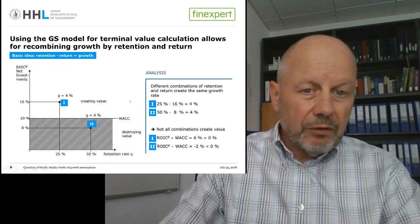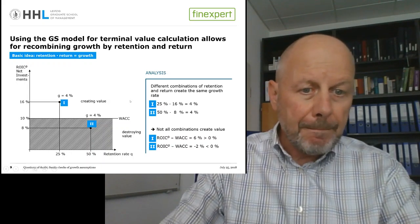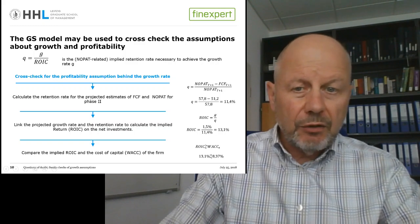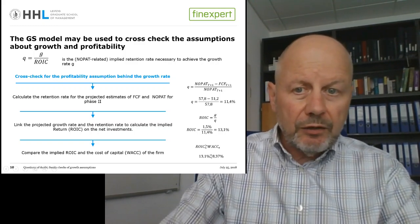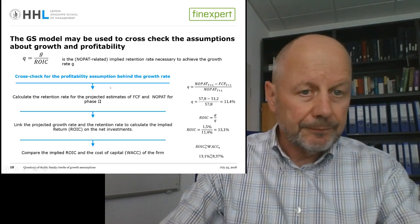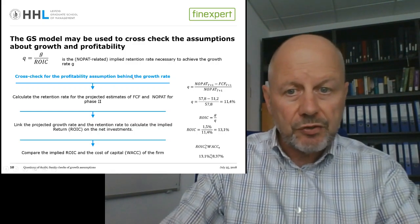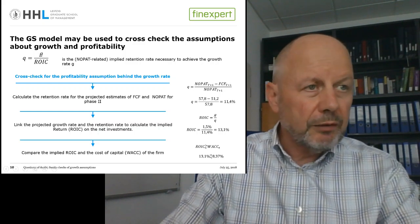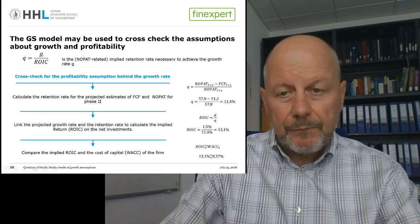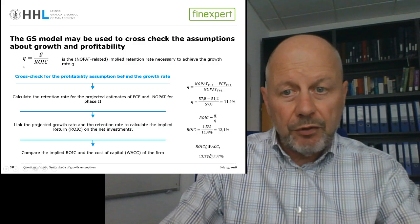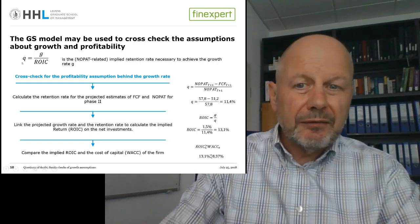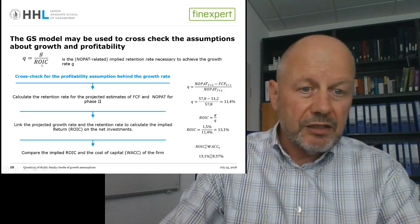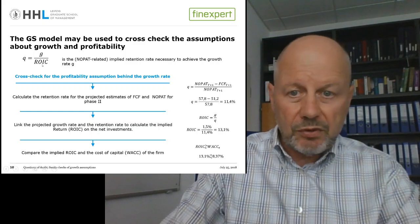Now we arrive at the sanity check that can be derived from the Gordon-Shapiro model, related to the magic triangle: retention × return = growth. In a valuation report — your own or one brought to you by the other side at the negotiation table — at least two of these three corners of the triangle can be derived. You can find the growth rate, as it is a standard component of the valuation report. And by looking at the terminal value year, you can calculate the retention rate. Then you rearrange and solve for the implied ROIC, comparing it against the WACC, which is also available in the report.